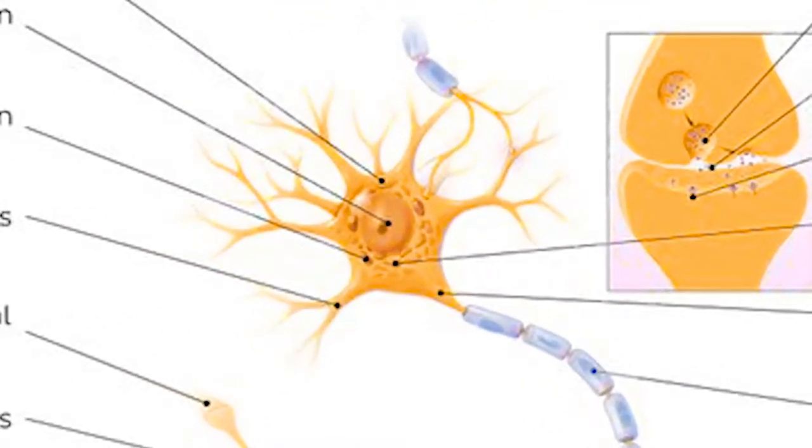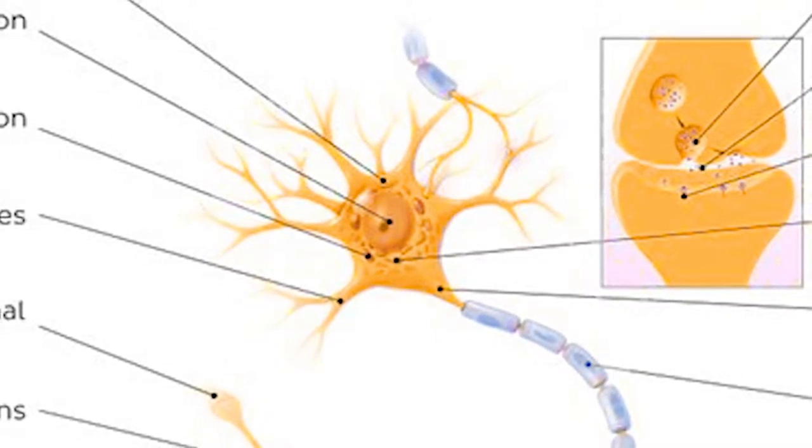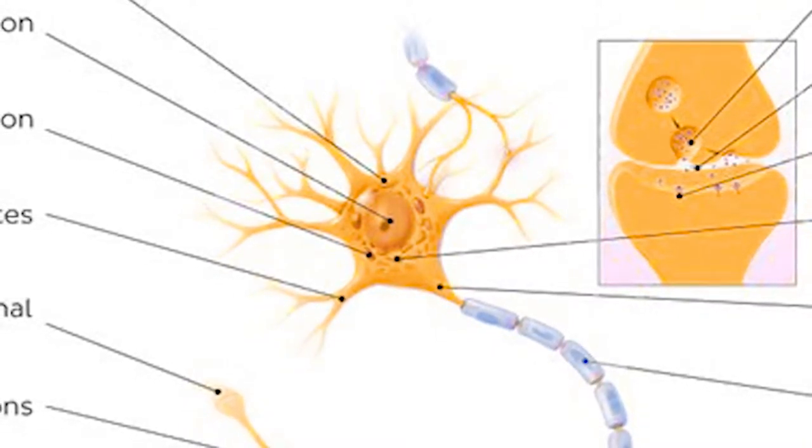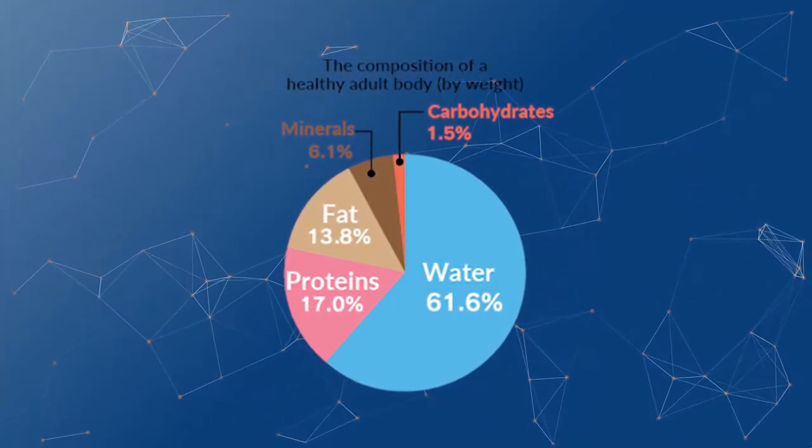To start, we have the main cell body, which contains Nissel bodies, the site of protein synthesis, and the nucleus, which contains all the information required to generate the cell. It is important to remember that, excluding water and fat, the human body is made up of entirely protein.